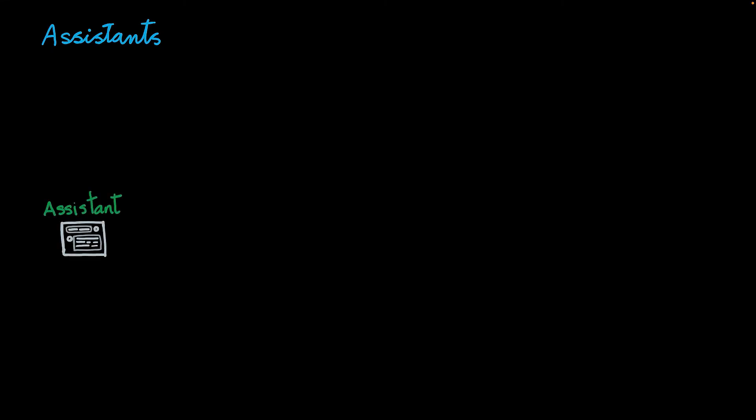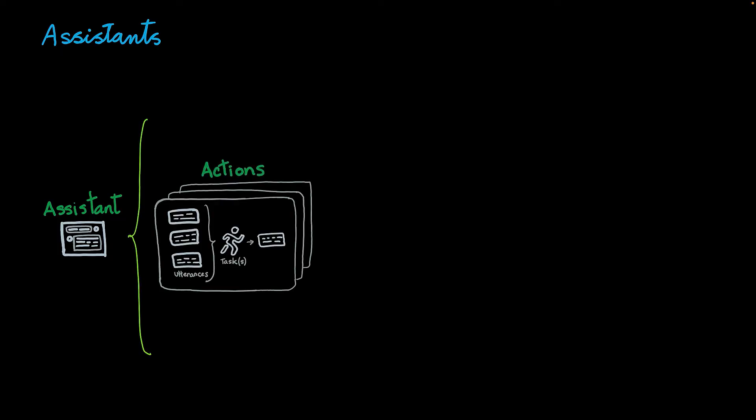Now let's talk about assistants. Assistants in Watson Orchestrate can be seen as a conversational entity configured to help you with a particular domain of requests or tasks. Within the assistant, the basic component is called actions. Actions combine a set of utterances with a particular task and produce a particular result. With an assistant you can create multiple actions, and you have to be careful so the utterances are different enough between actions and there is no ambiguity. By adding multiple actions into an assistant, you can create powerful conversational experiences that help people perform automated tasks.